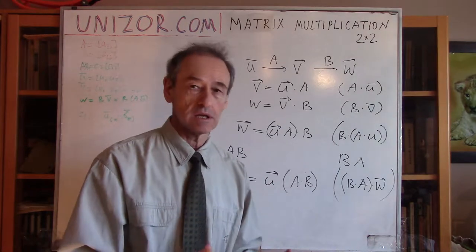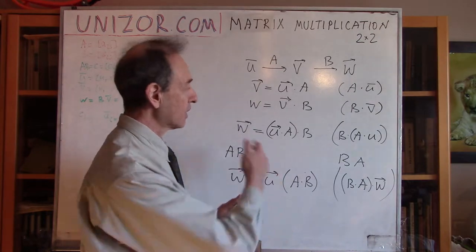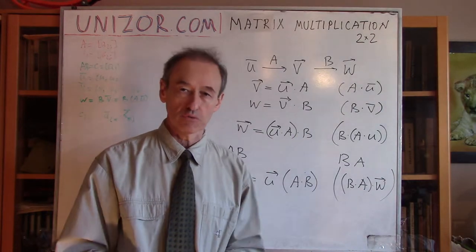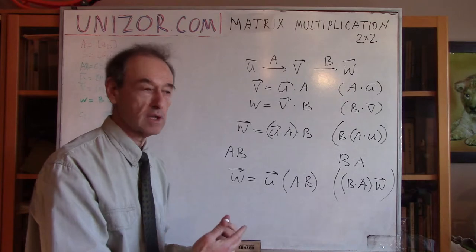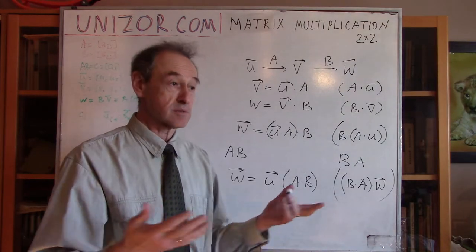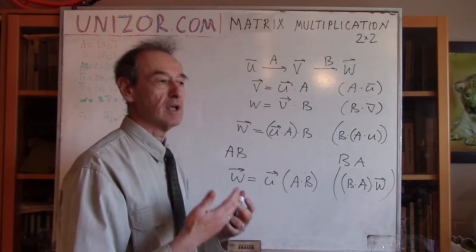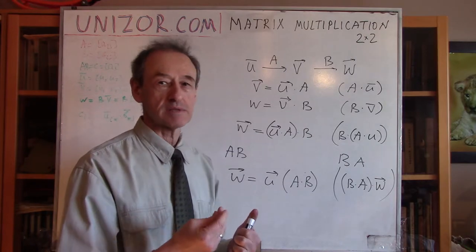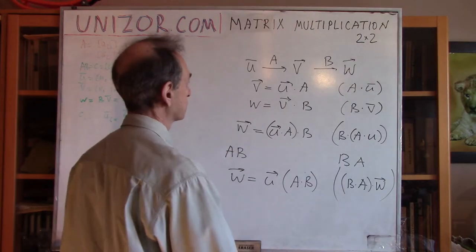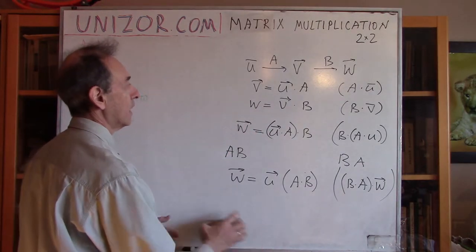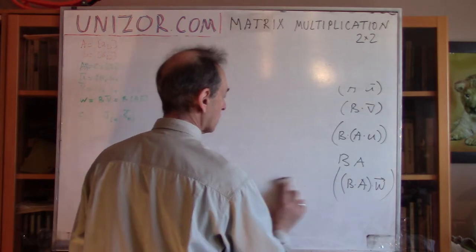That's the understanding of what's behind the definition. It's very easy to define an operation saying you do this and this is called the product of two matrices — but this is why. We have to satisfy this particular condition so the operation of multiplication is convenient to work with, really reflecting the linear transformation behind it. That's what I'm going to do with two-dimensional vectors and two-by-two matrices.